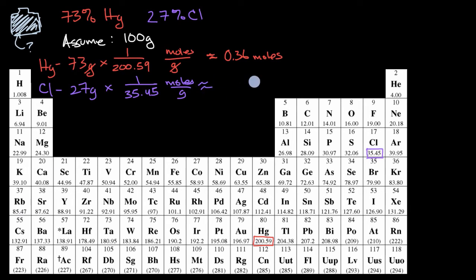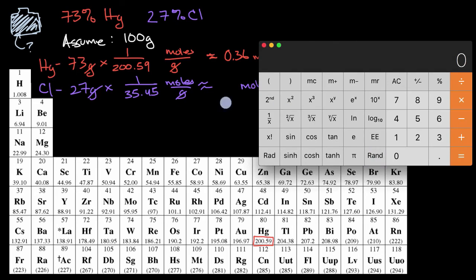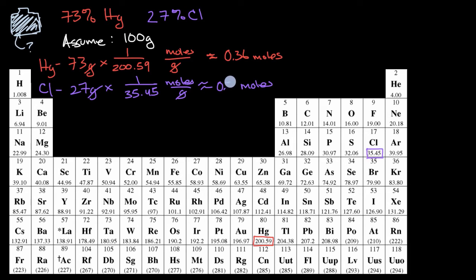And so this is going to approximate how many moles, because the grams are going to cancel out. And it makes sense that this is going to be a fraction of a mole, because 27 grams is less than 35.45. We take 27 divided by 35.45, that's 0.76, roughly.